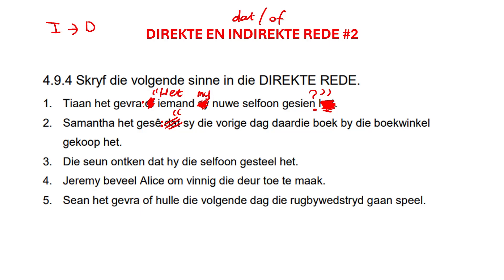This is not a question — this is a statement. So Samantha het gesê, and 'zij' needs to change to 'ek'. After 'ek' is now my verb. What is my verb? 'Het'. I remove it from the end and insert it here: Ek het die vorige dag daardie... but we don't speak like that in direkte rede. That has to change. 'Die vorige dag' becomes 'gister', and 'daardie' becomes 'hierdie'. Ek het gister hierdie boek bij die boekwinkel gekoopt. Full stop. I close my quotes.